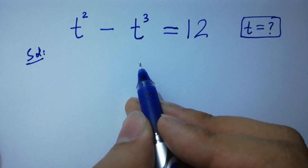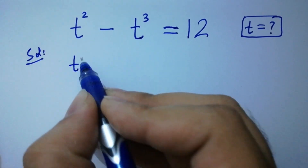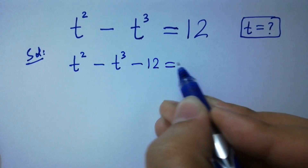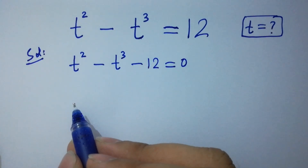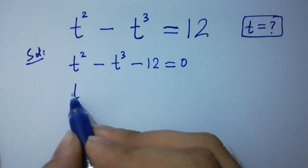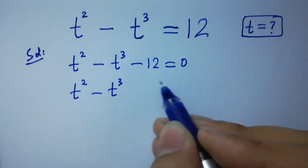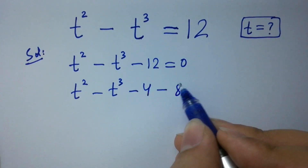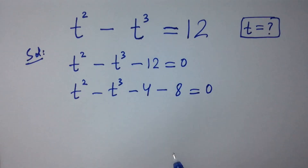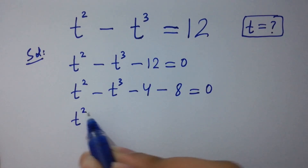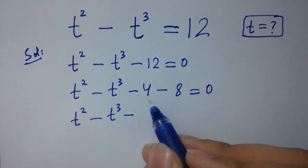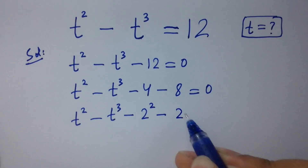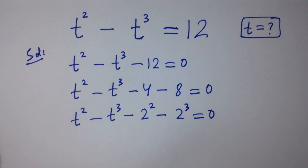This equation can be written as t squared minus t cubed minus 12 equals 0. By corresponding, t squared minus t cubed minus 12 is the same as minus 4 minus 8 equals 0, where 4 is the same as 2 squared and 8 is the same as 2 cubed.